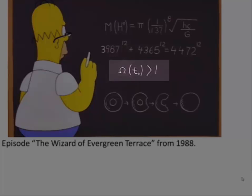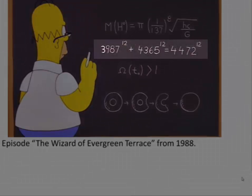Homer finds out that the density is greater than one, and therefore the universe will actually come together. There will be a big crunch, which will be the end of the universe. It's actually wrong, though.